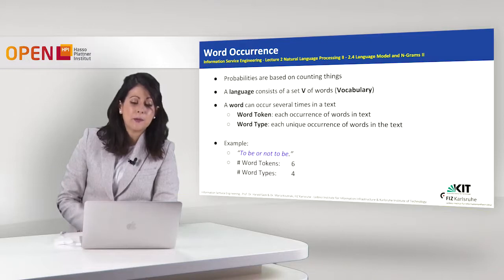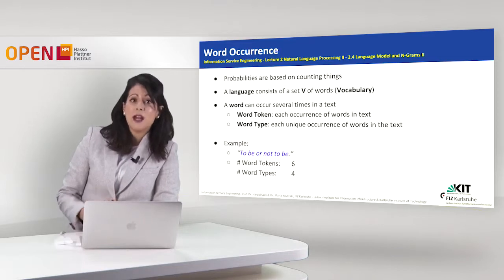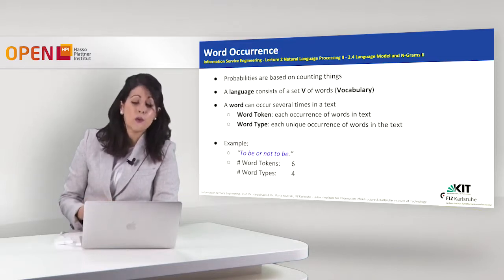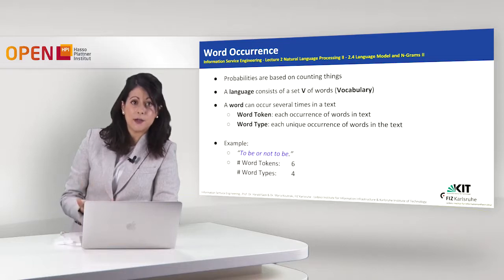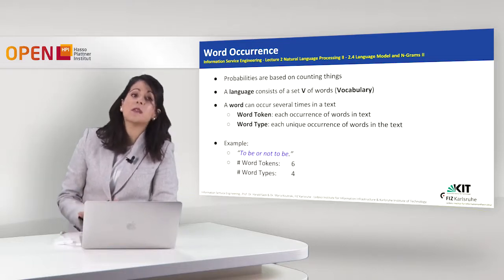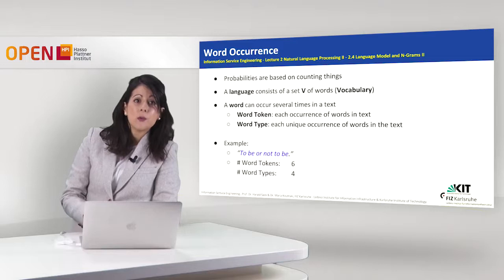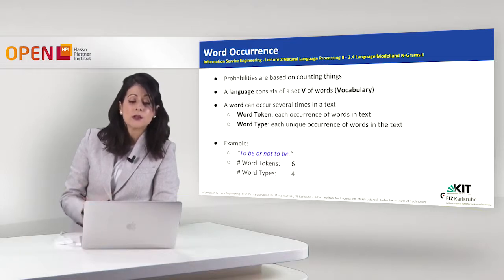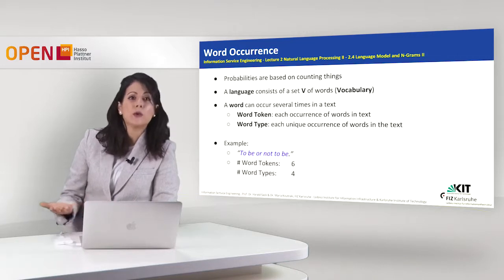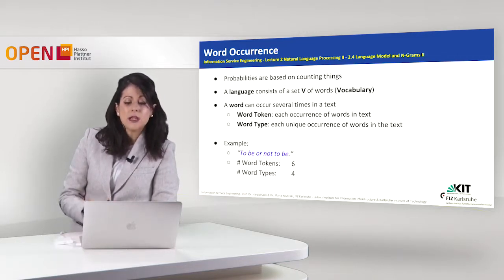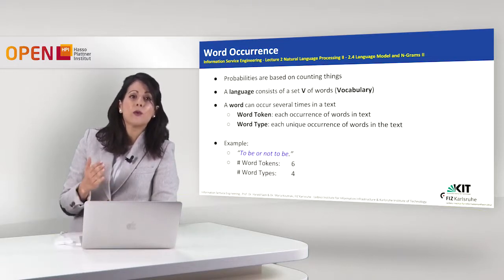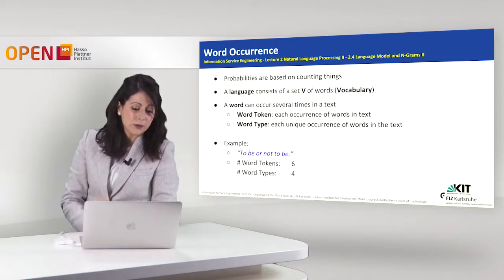Let us go back to probabilities. Probabilities are based on counting things, and in this case they are based on counting words. A language consists of a set V of words, which is called vocabulary, and a word can occur several times in a text. We distinguish between word token and word type. A word token is each occurrence of a word in a text — how many words we have in a text. A word type is each unique occurrence of a word — how many distinct words we have in the text.